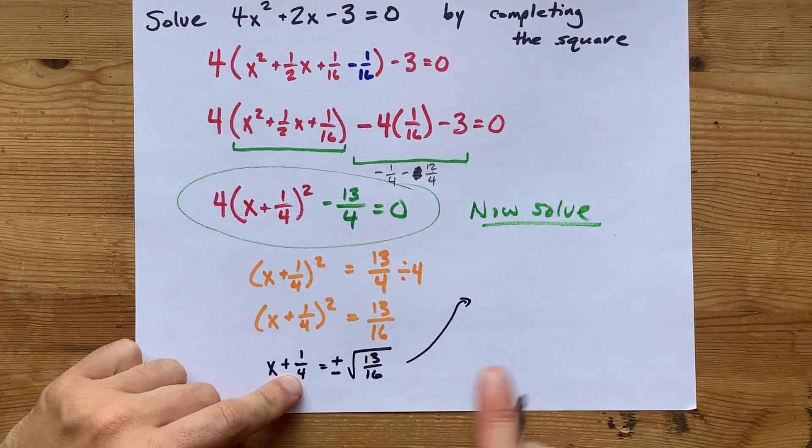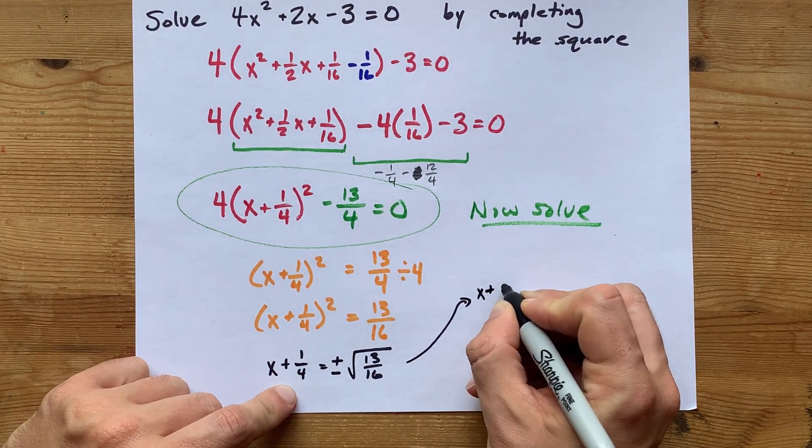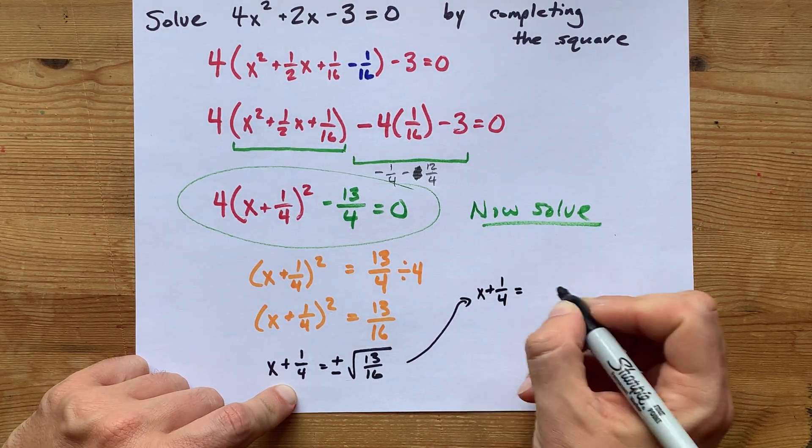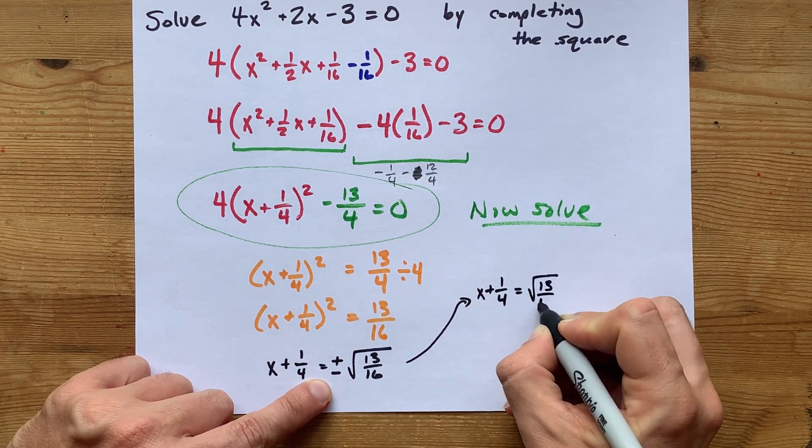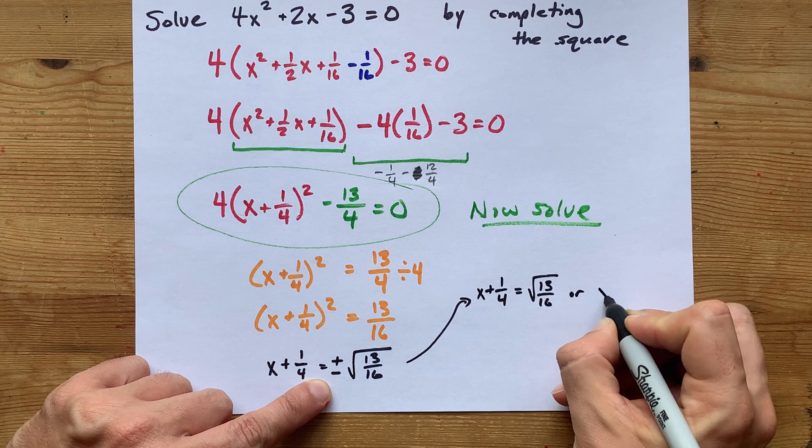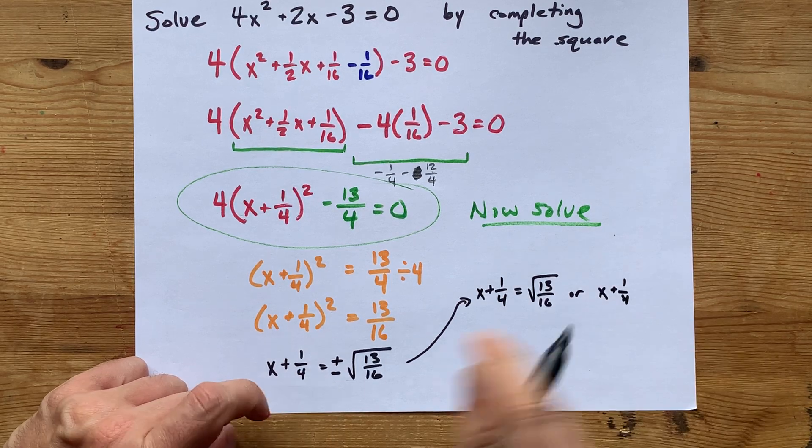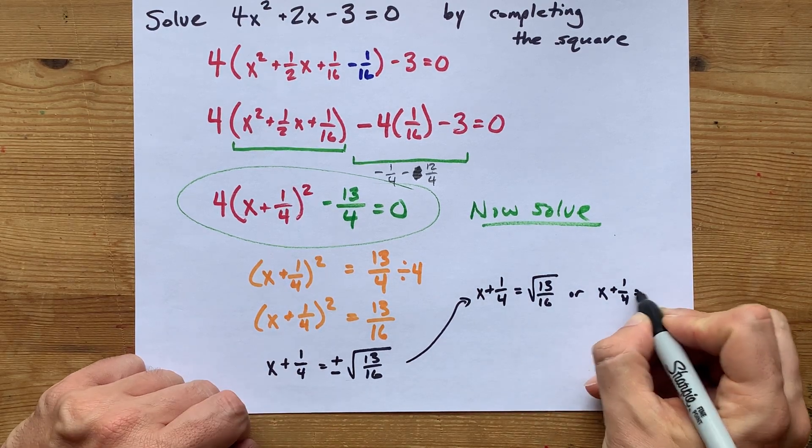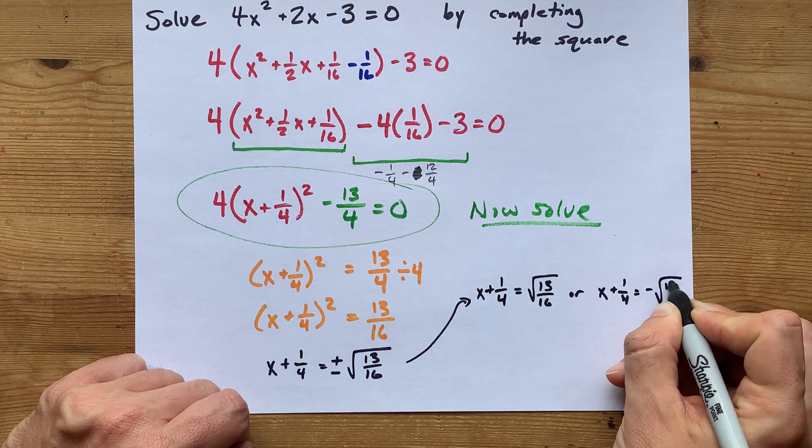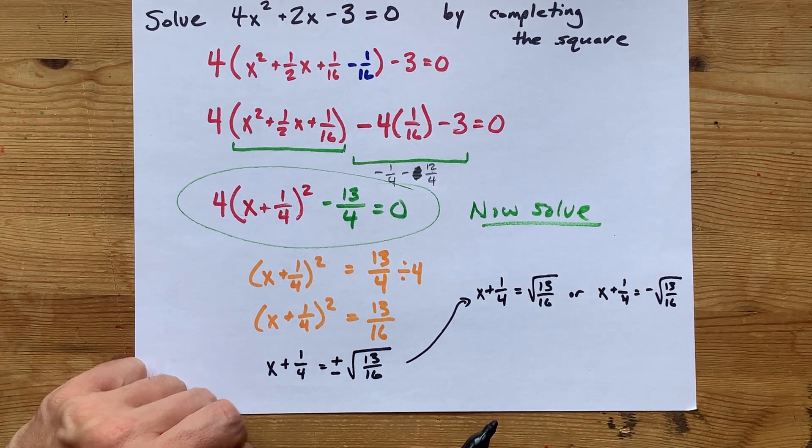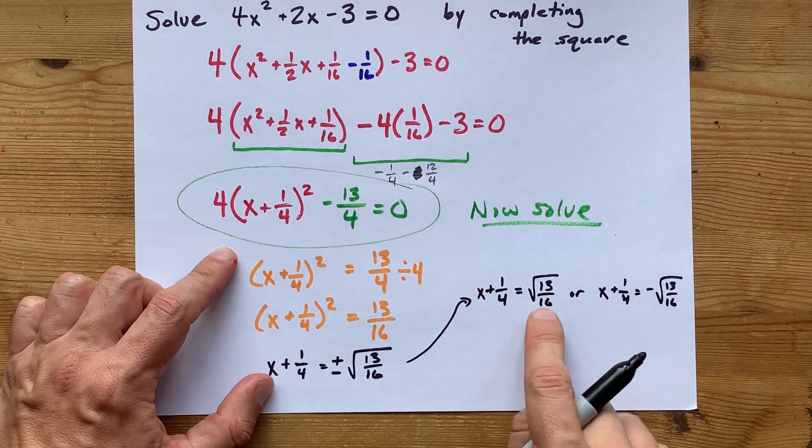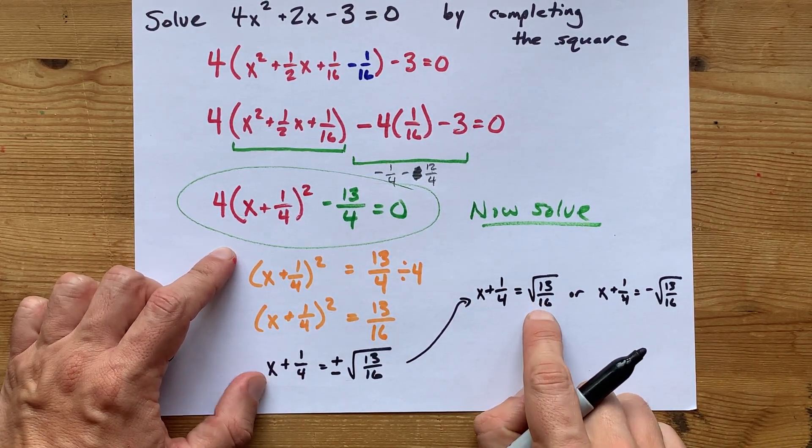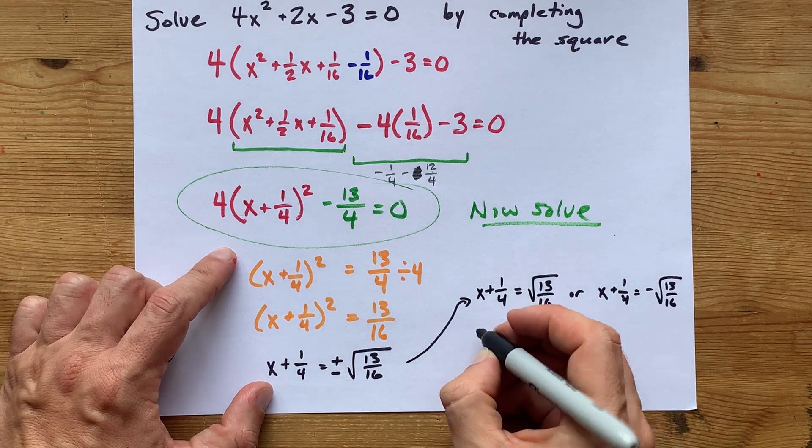At this point, you have two different options. So, X plus a quarter could be positive root of 13 sixteenths. Or, X plus a quarter, and again, I'm just copying the left side, could be negative square root of 13 sixteenths. Oh, man, this is turning out to be pretty ugly. I can take the square root of 16, but not 13.